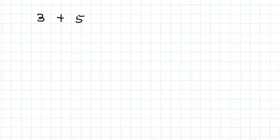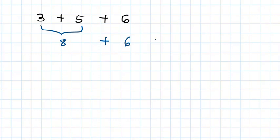Let's assume we are given three plus five plus six. The first alternative we have is to first add the first two numbers. Three plus five gives you eight, and then eight plus six becomes 14.